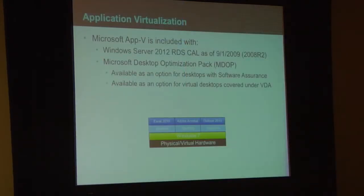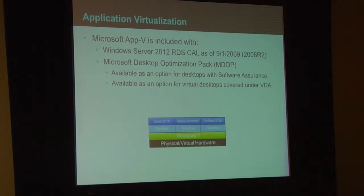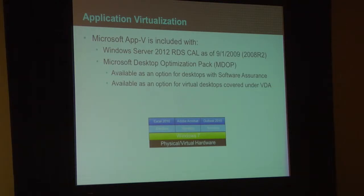Let's talk about application, presentation, and desktop. App-V is also bundled with RDS since 2008 R2 — if you buy 2008 R2, App-V is actually provided with the RDS CAL, though a lot of people don't know that. The other way to get it is through MDOP, the Microsoft Desktop Optimization Pack, which a lot of people buy on top of Software Assurance on their desktops. It's also available as an option under VDA.